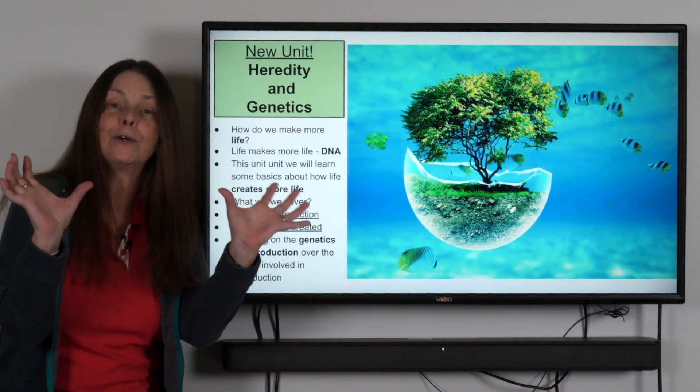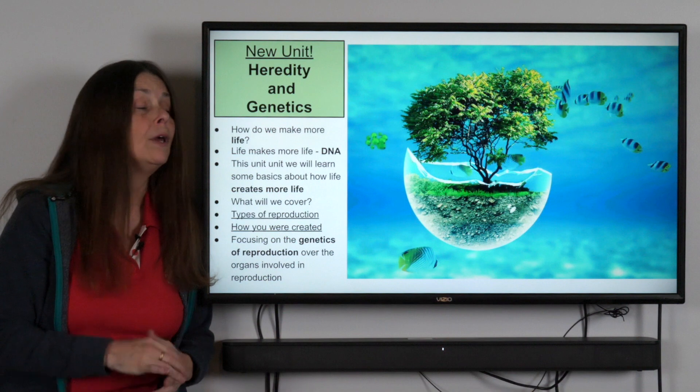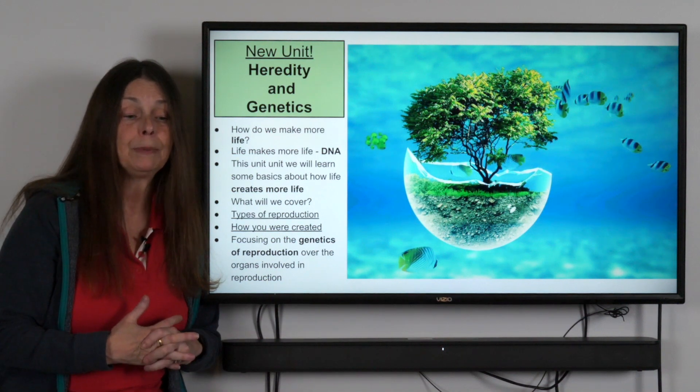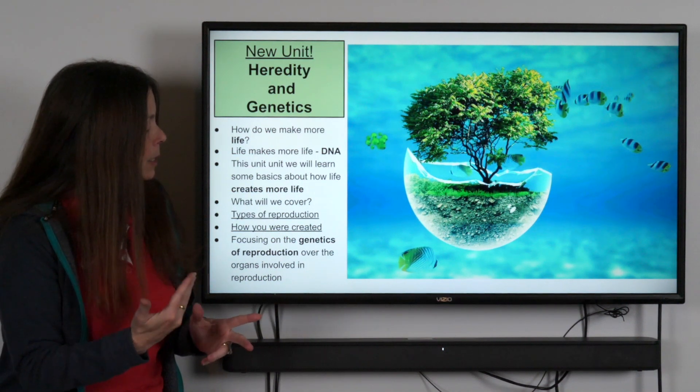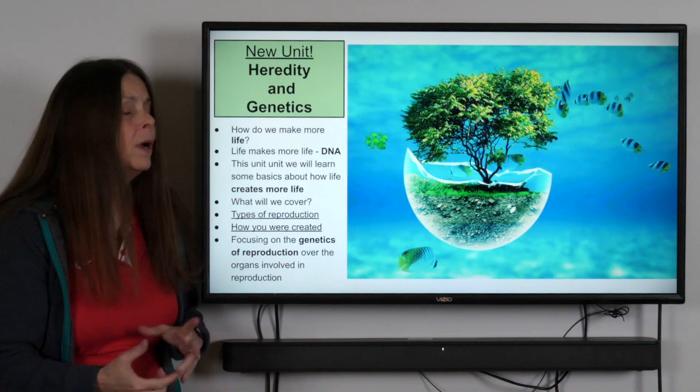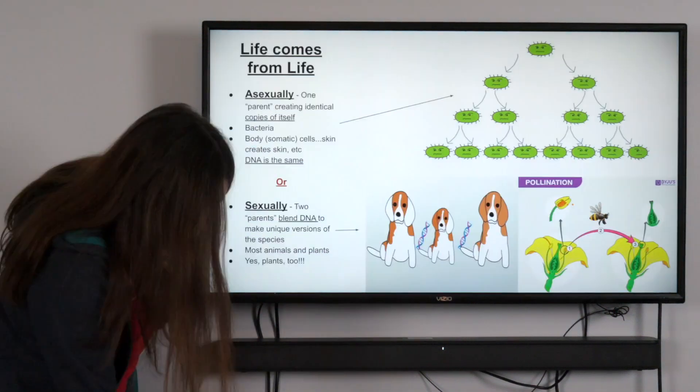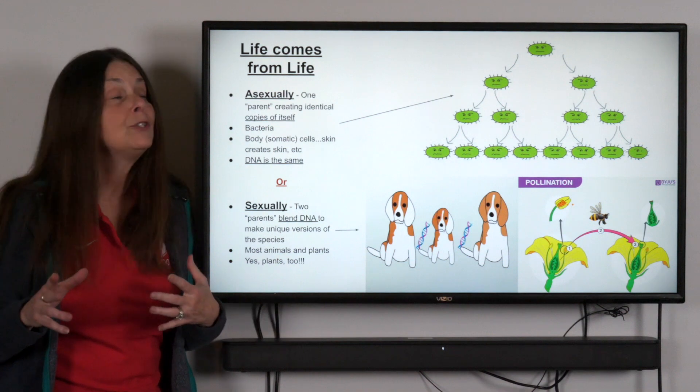We're first going to look at two different categories of reproduction. The first one being asexual reproduction and the second one being sexual reproduction. I'm going to switch slides.